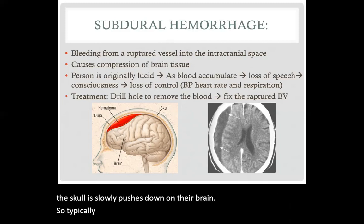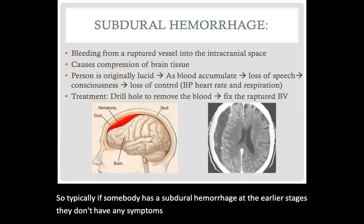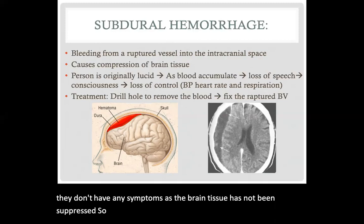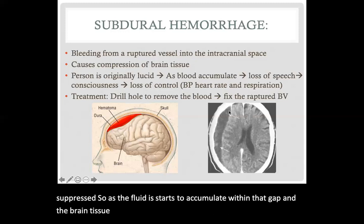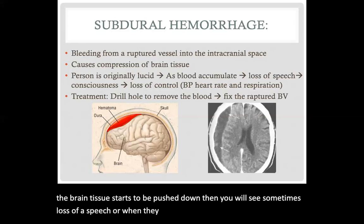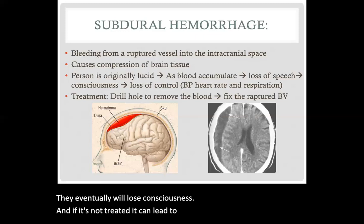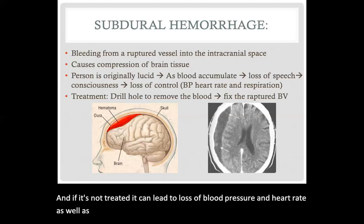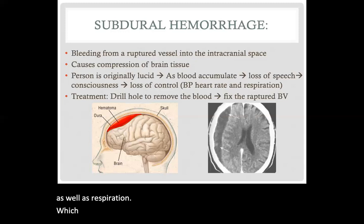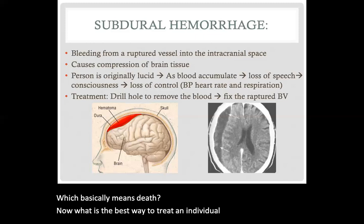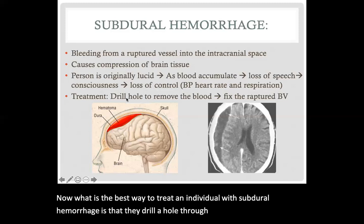Typically, if somebody has a subdural hemorrhage, at the earlier stages they don't have any symptoms, as the brain tissue has not yet been compressed. As fluid accumulates within that gap and brain tissue starts to be pushed down, you will see symptoms like loss of speech or words that don't make sense, and eventually loss of consciousness. If untreated, it can lead to loss of blood pressure, heart rate, and respiration — which essentially means death. The best treatment is to drill a hole through the skull and drain the fluid creating pressure on the brain tissue, while also fixing the ruptured blood vessel to prevent recurrence.